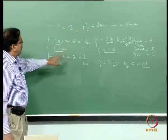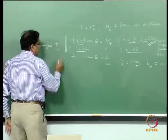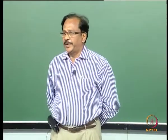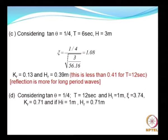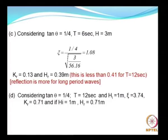In the comparison we changed only T and found that the reflection coefficient is higher for a long period wave. Now in part D, we keep the wave period constant at 12 seconds but reduce the wave height. The surf similarity parameter works out to 3.74, and KR = 0.71, leading to a higher reflection coefficient.